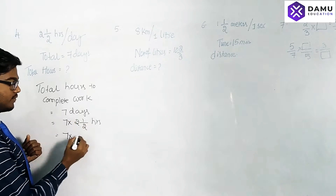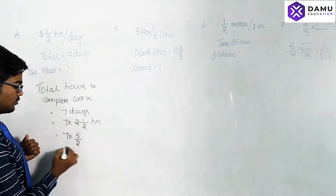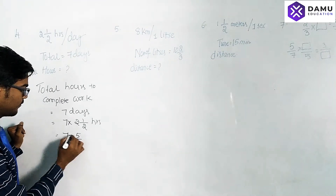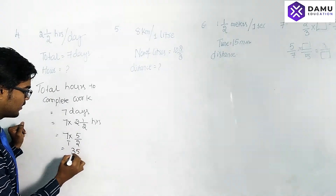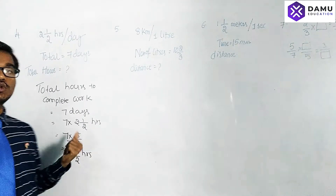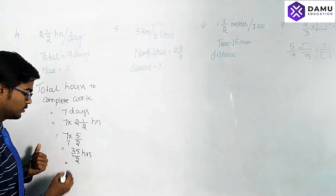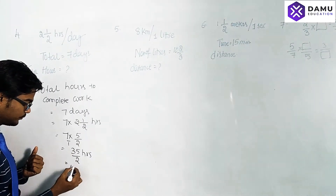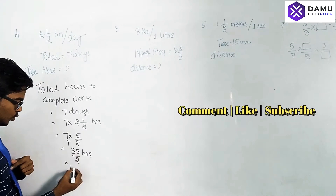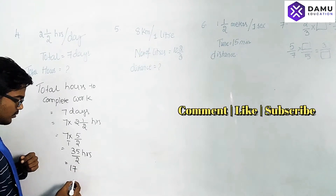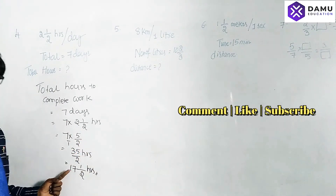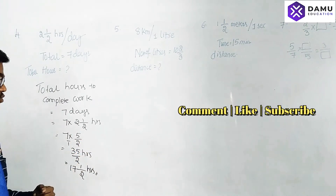Two and a half as an improper fraction: 2×2 = 4, plus 1 = 5, so it becomes 5/2. Then 7 × 5/2 = 35/2 hours. We can also express this as a mixed fraction: 35/2 = 17 and 1/2 hours.